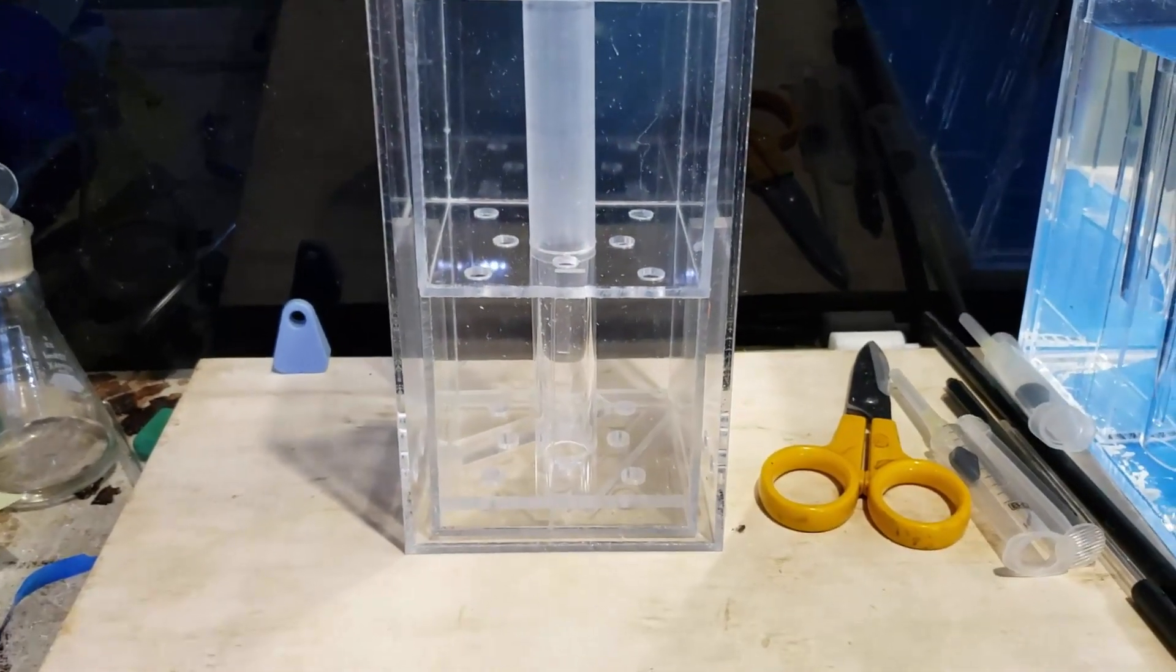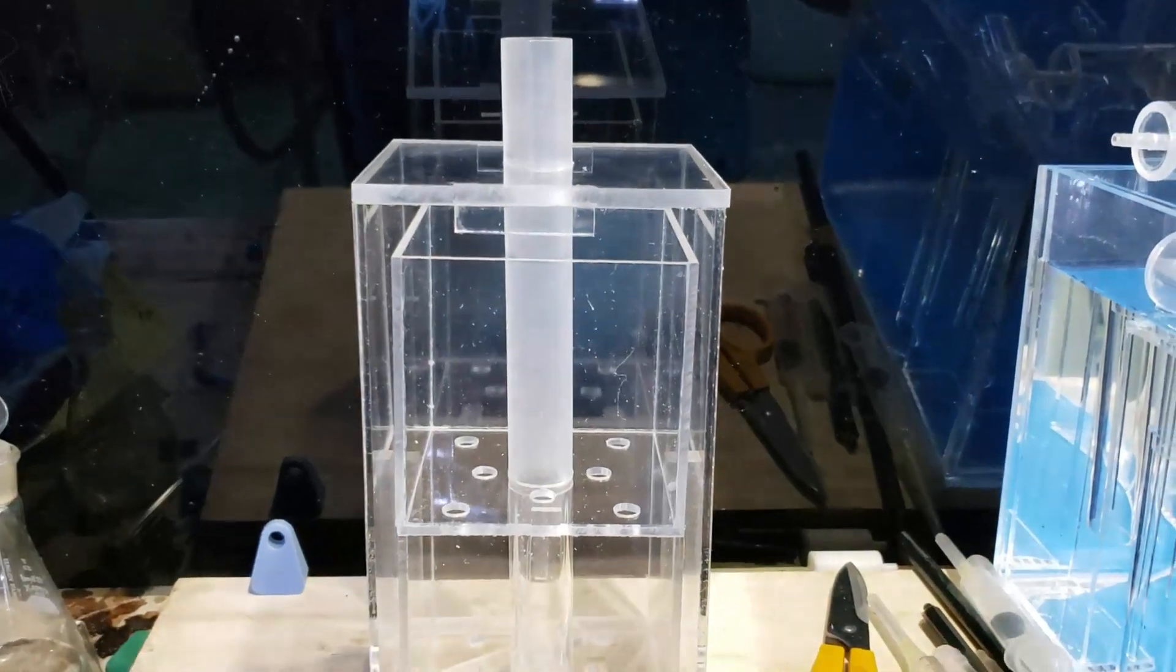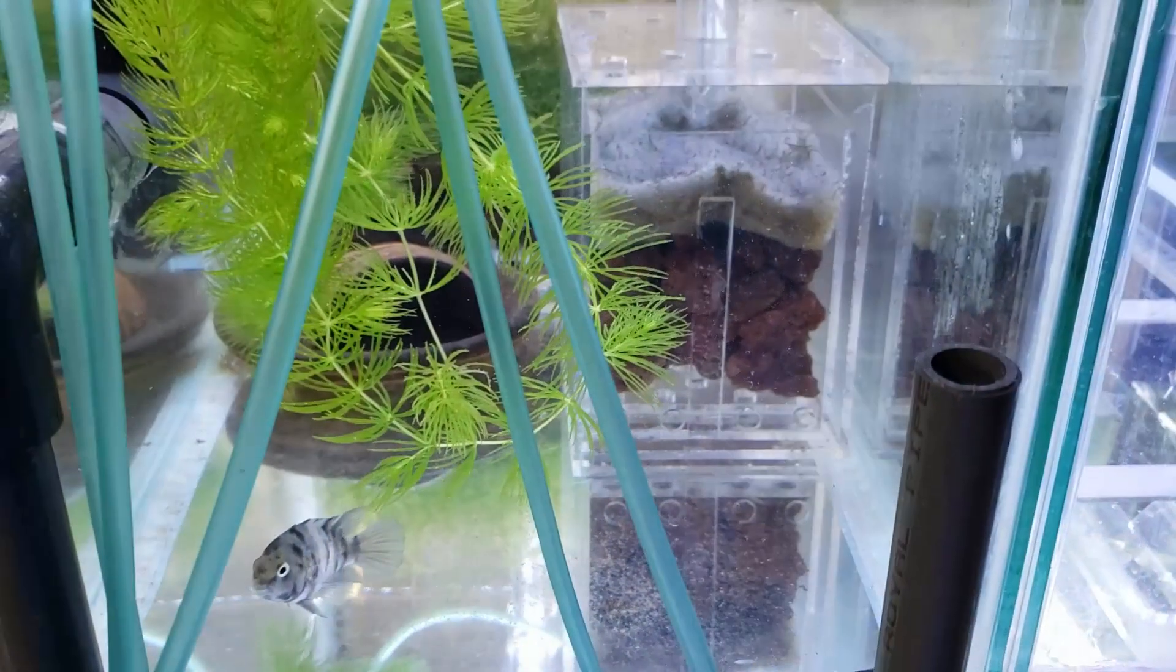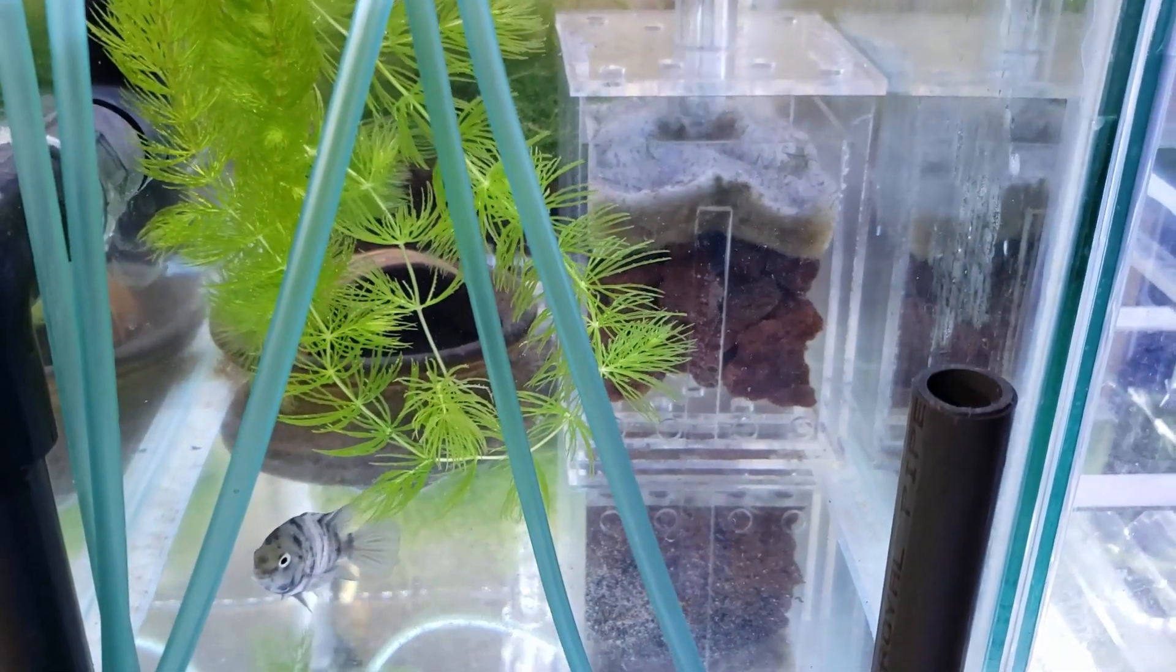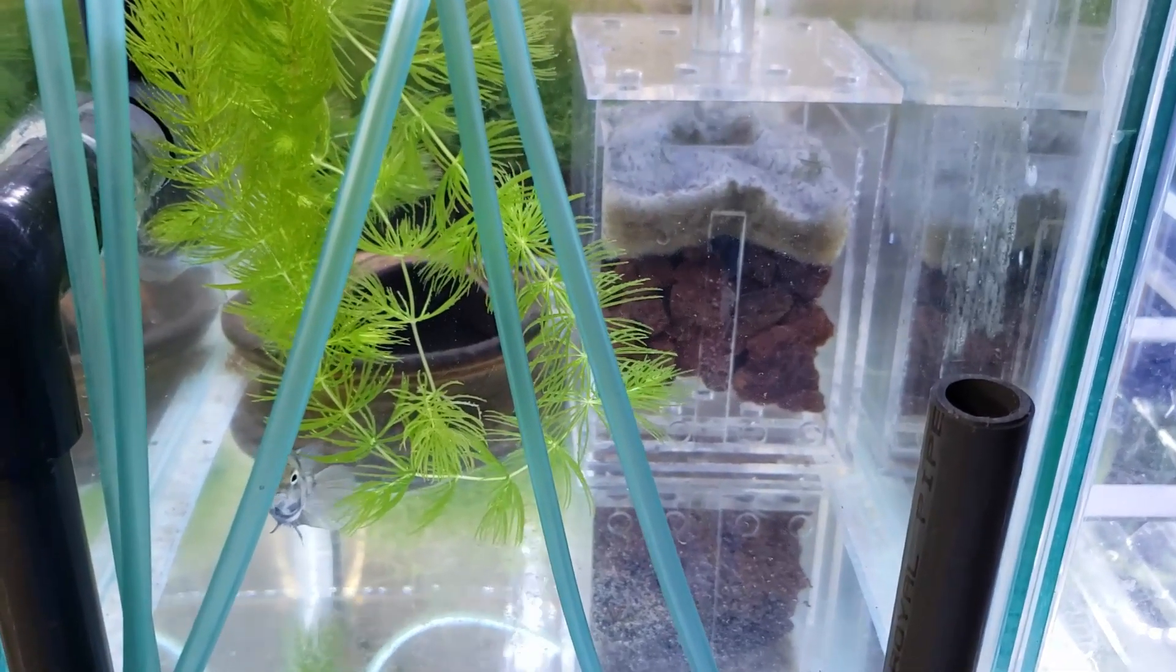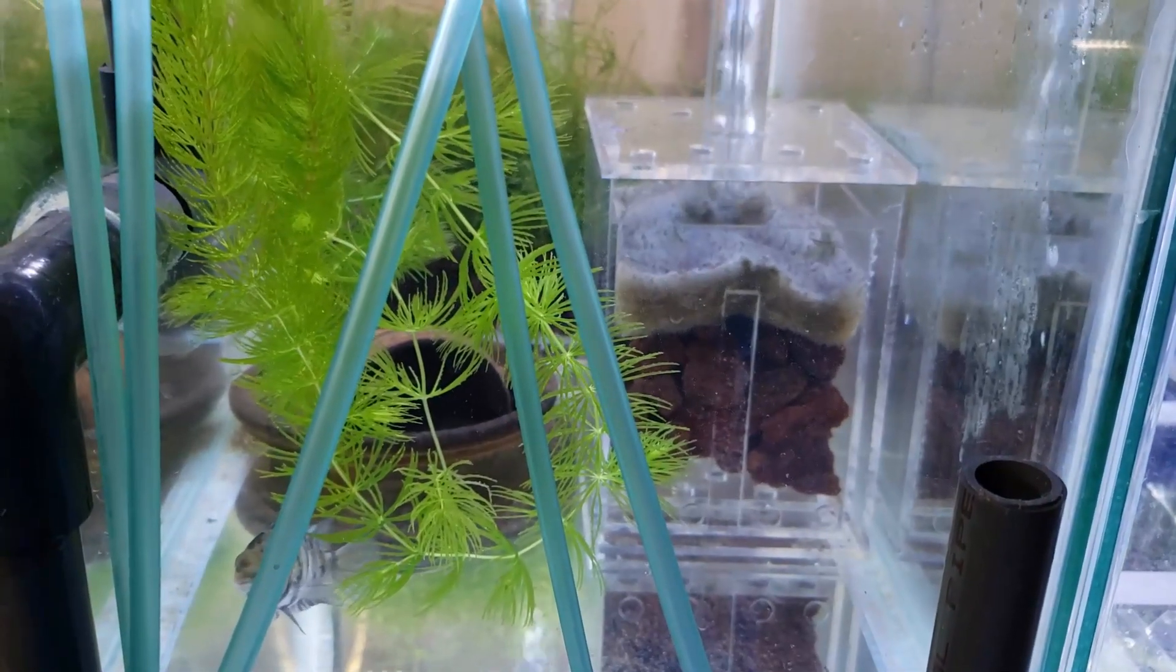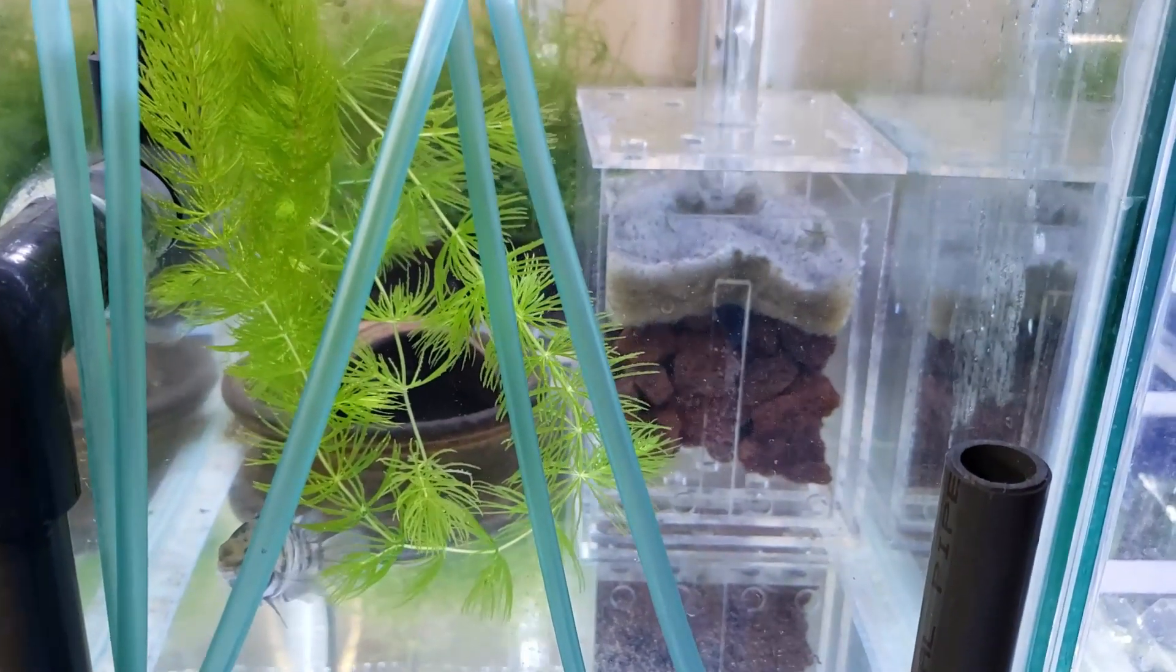So you're going to stick this into a tank but first I want to show you. This is the filter, the tank that had the Japanese filter on it and remember it looked really cloudy and disgusting. Well this is, I put the single chamber box filter, the double aired one up in here and as you can see it's nice and crystal clear now.